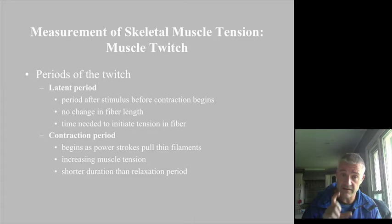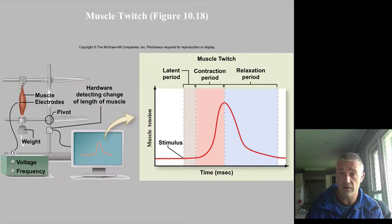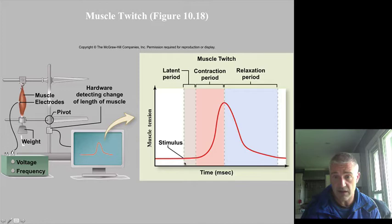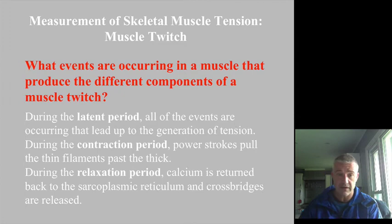We then start getting actin and myosin to pull past one another — that begins the contraction period, which happens really quickly in skeletal muscle. After that, as the muscle releases and returns to normal tension, that is the relaxation period. Looking at a myogram, you can see: there is an initial stimulus, a period of no contraction called the latent period, the contraction period, and then after stimulation ends, the relaxation period. Those three events are the latent period, contraction period, and relaxation period.